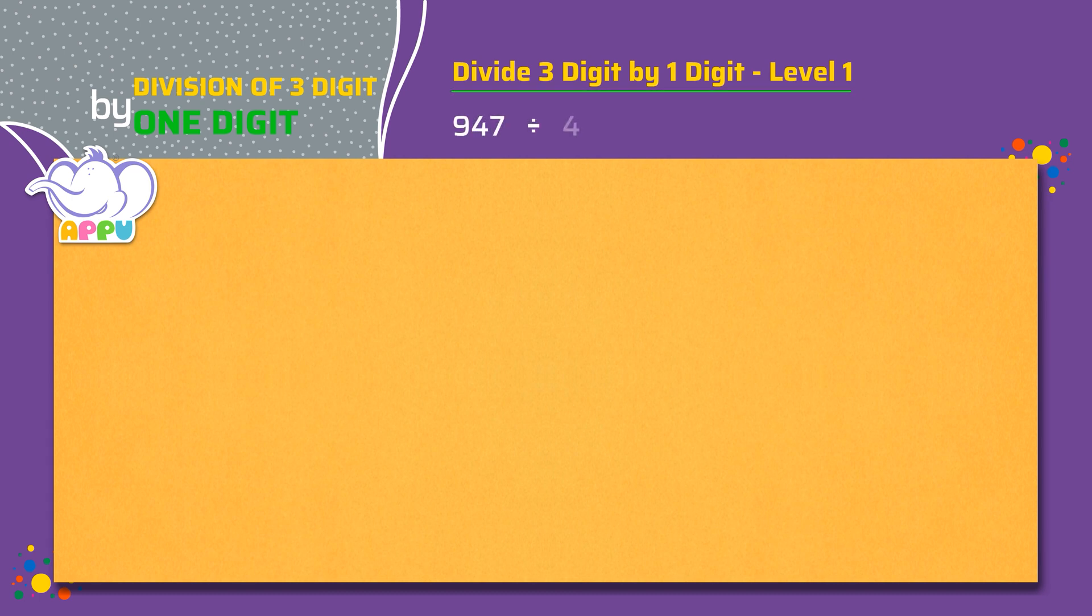947 divided by 4. We write the division bracket and write 4 outside the bracket and 947 inside the bracket.